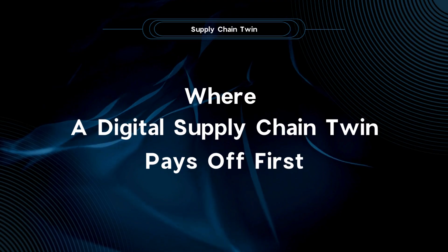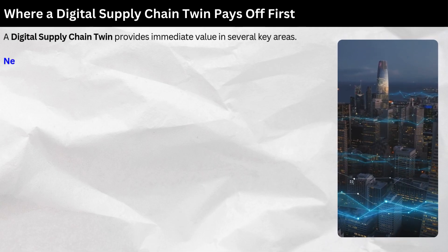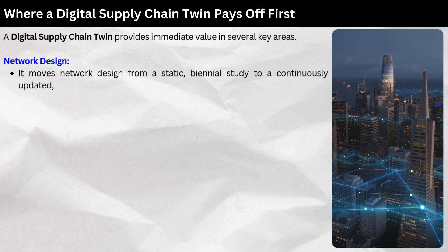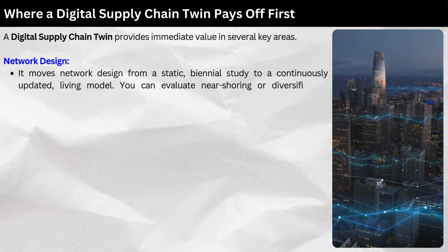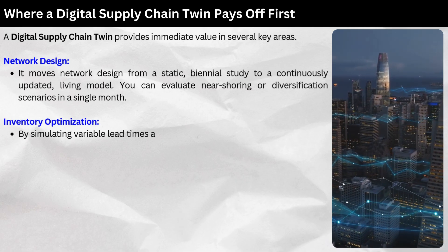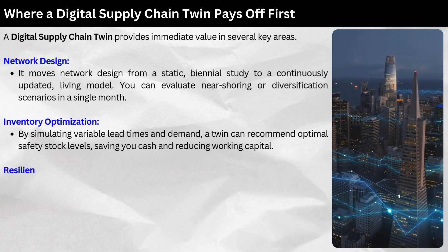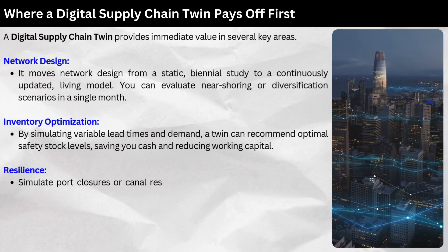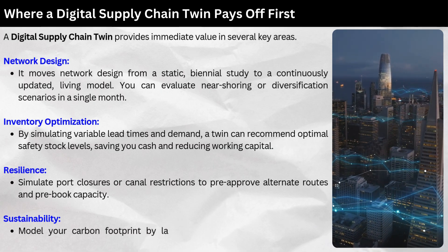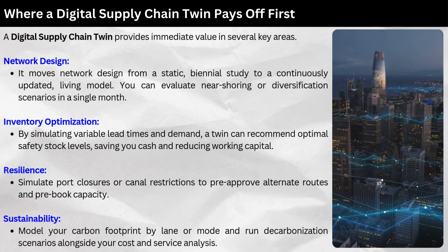Where a digital supply chain twin pays off first. It provides immediate value in several key areas. Network design: it moves network design from a static, bi-annual study to a continuously updated living model — you can evaluate near-shoring or diversification scenarios in a single month. Inventory optimization: by simulating variable lead times and demand, a twin can recommend optimal safety stock levels, saving cash and reducing working capital. Resilience: simulate port closures or canal restrictions to pre-approve alternate routes and pre-book capacity. Sustainability: model your carbon footprint by lane or mode and run decarbonization scenarios alongside your cost and service analysis.